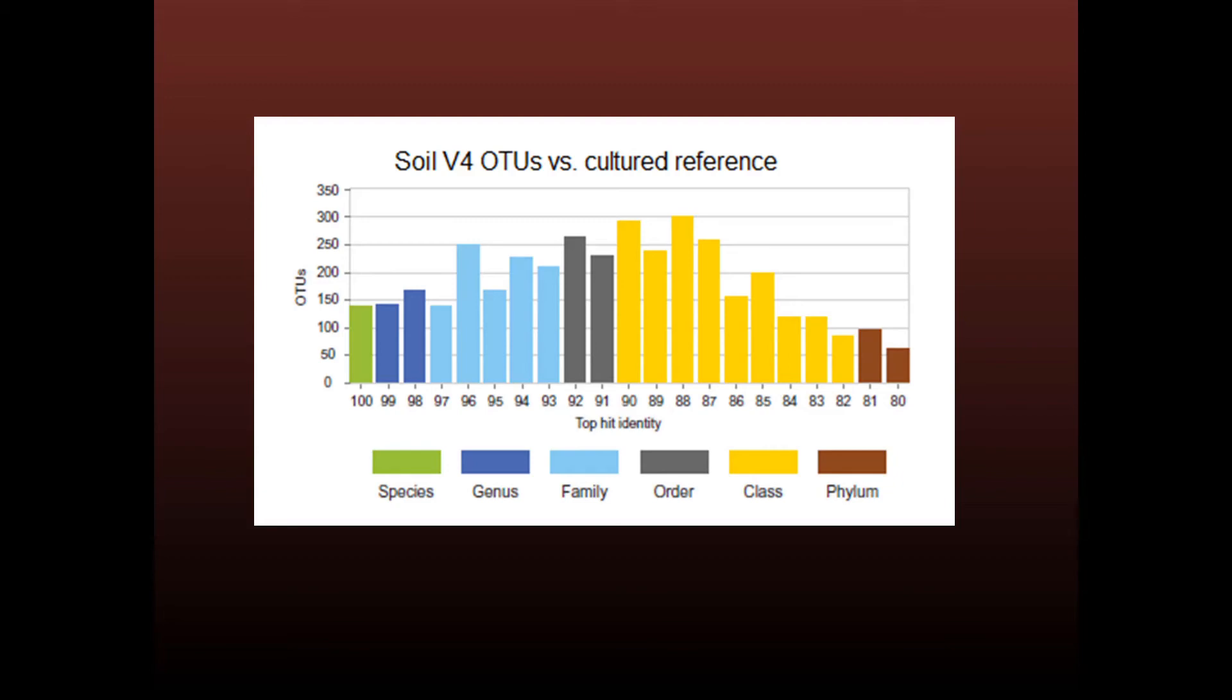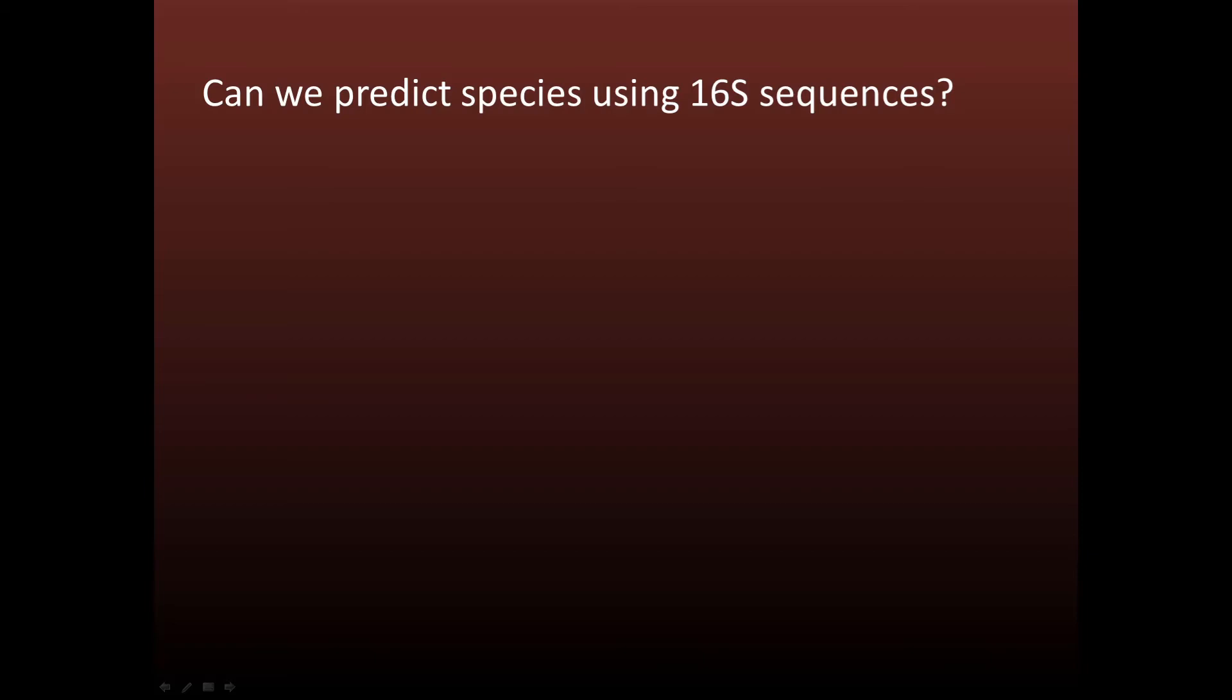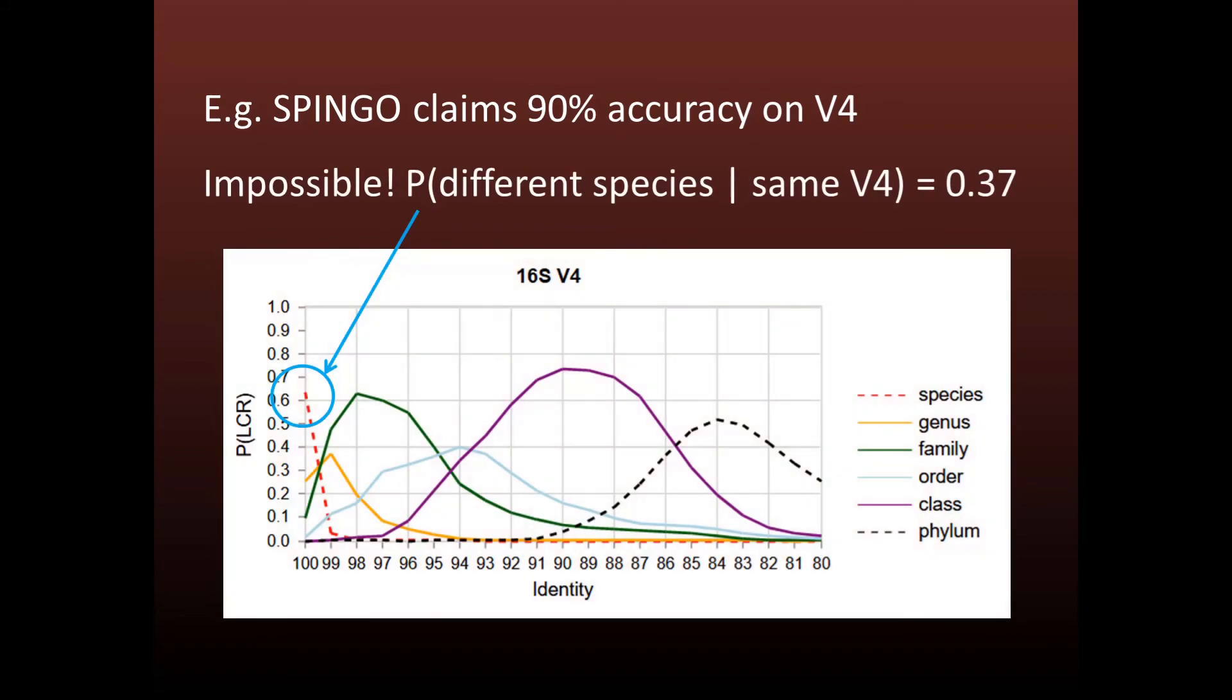Can we predict the species name from a 16S sequence? Several published papers have reported high accuracy in this task. For example, Spingo claims 90% species prediction accuracy from V4 sequences. However, this is clearly impossible because the probability that two identical V4 sequences come from different species is 0.37.